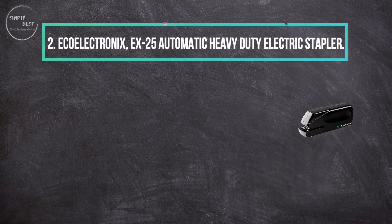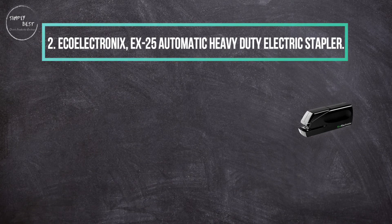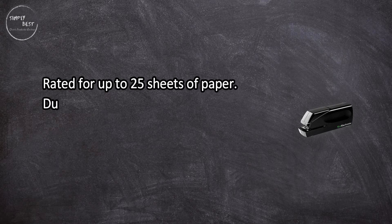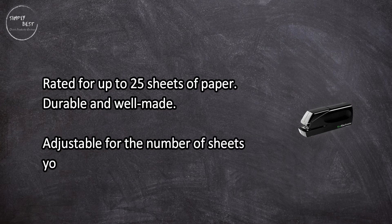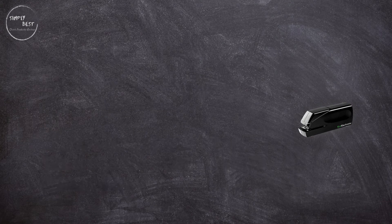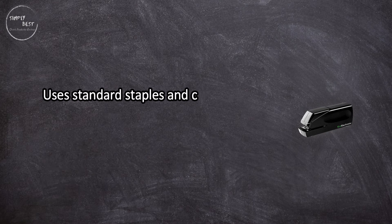The X25 automatic heavy-duty electric stapler rated for up to 25 sheets of paper, durable and well made, adjustable for the number of sheets you need to staple, works on AC power or battery power, uses standard staples and comes with staples loaded.